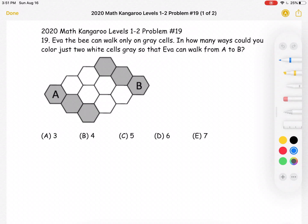This is the 2020 Math Kangaroo Levels 1-2, Problem Number 19. Eva the bee can walk only on gray cells. In how many ways could you color just two white cells gray so that Eva can walk from A to B?